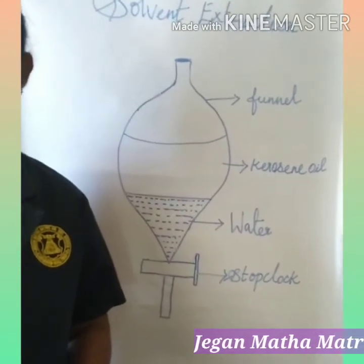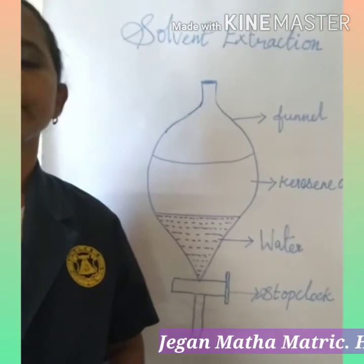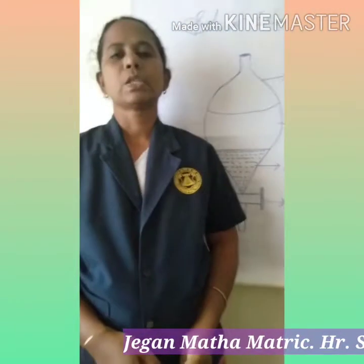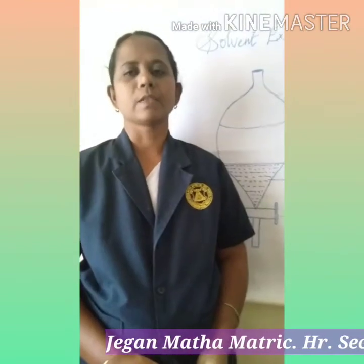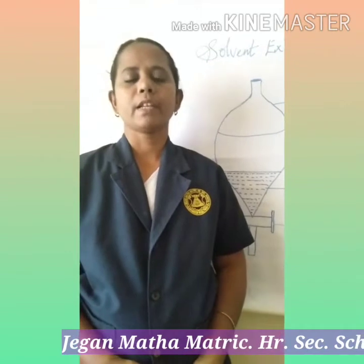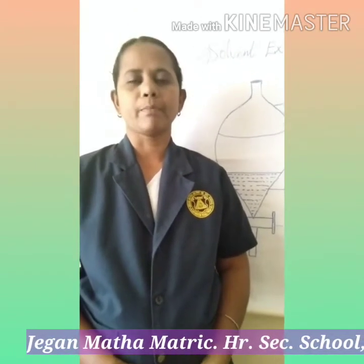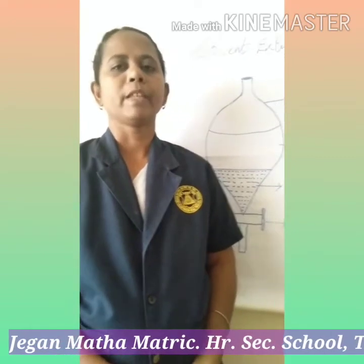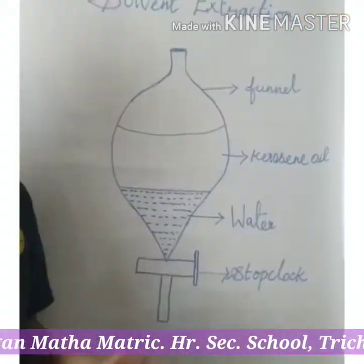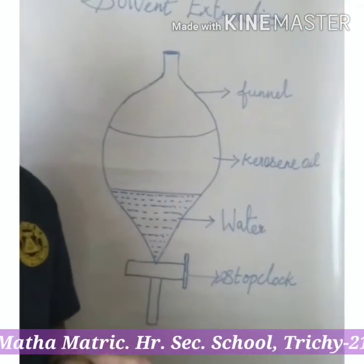In the previous class we learnt about sublimation and centrifugation. Solvent extraction process was first developed as a tool of analytical chemistry. Every metallic element on the periodic table can be separated by the method of solvent extraction. This method is used to separate two immiscible liquids.